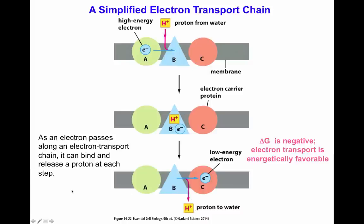As an electron passes along the electron transport chain, it can bind and release a proton at each step. Therefore, there is a change in free energy that is negative, indicating that the transport of electrons is energetically favorable.